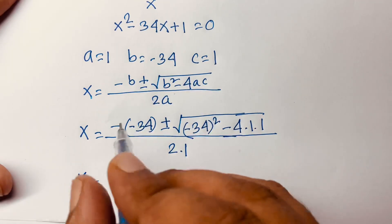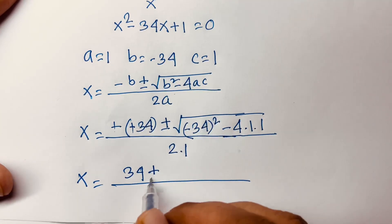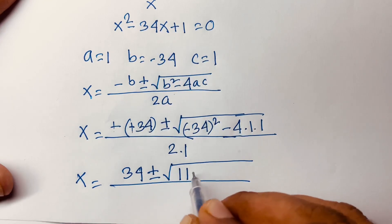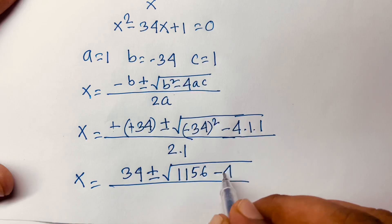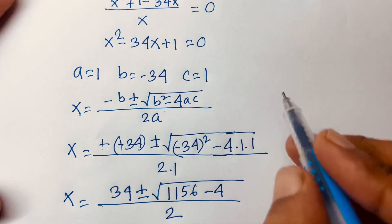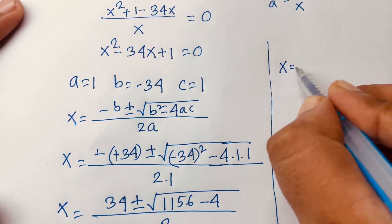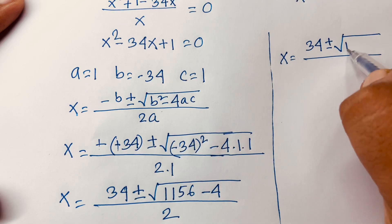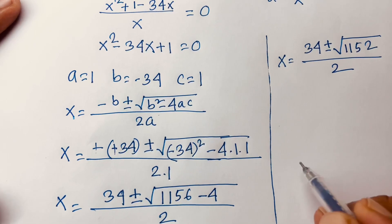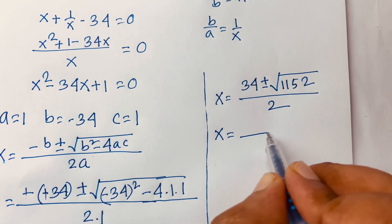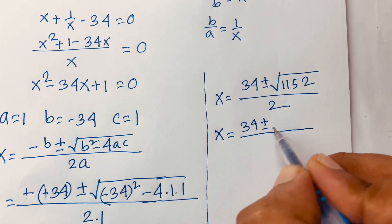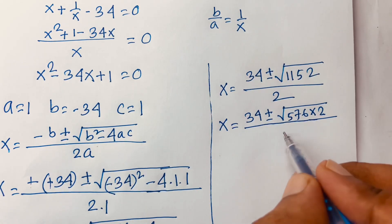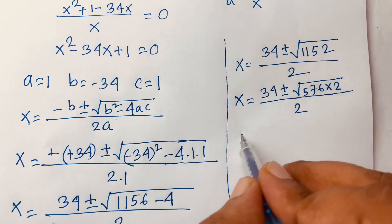So x equals minus of minus 34, which is plus 34, plus or minus square root of 34 whole squared, which is 1156, minus 4 times 1 times 1, which is 4, over 2. This becomes x equals 34 plus or minus square root of 1152 over 2.